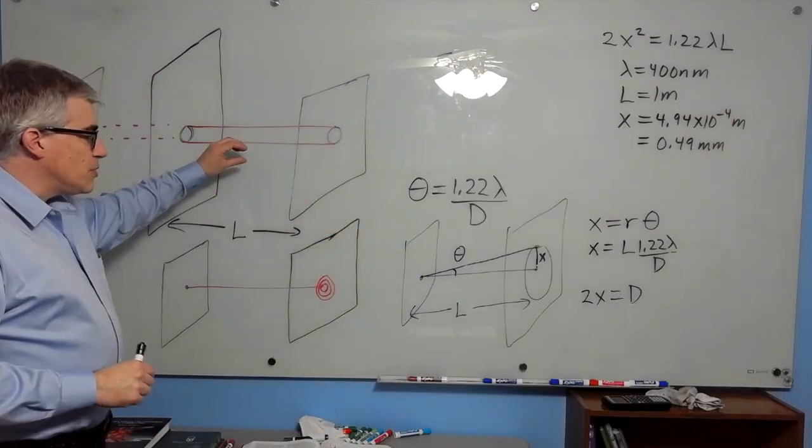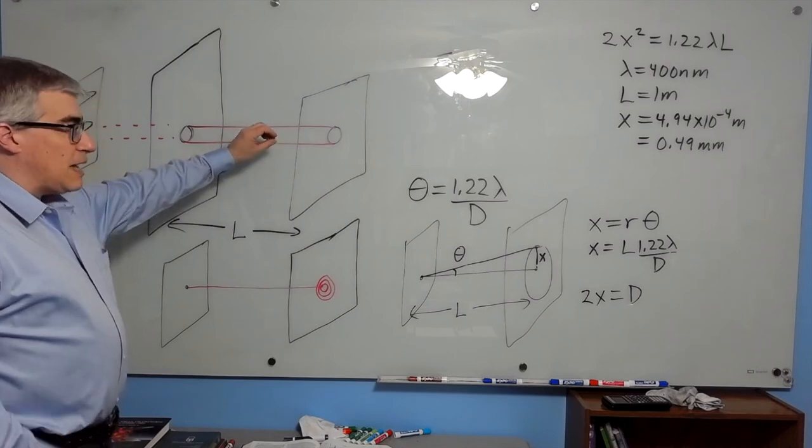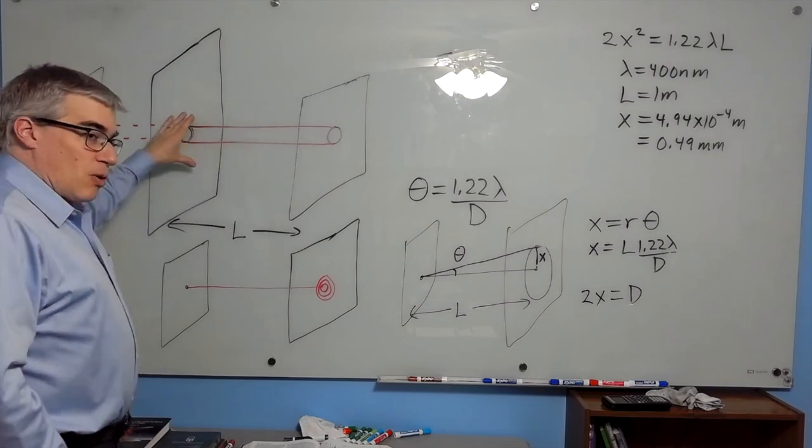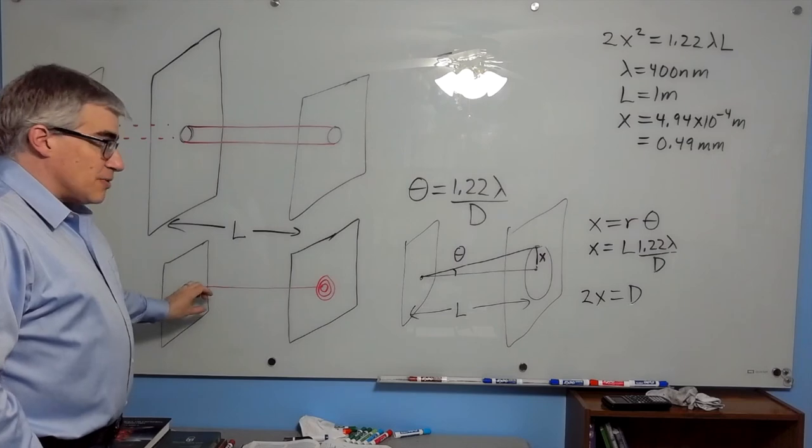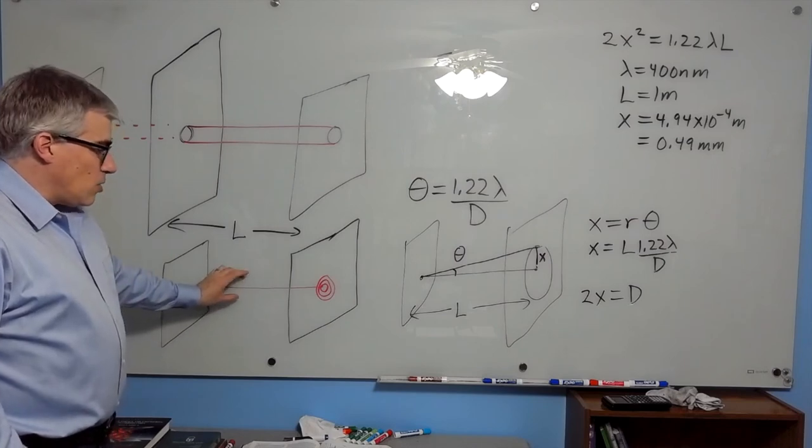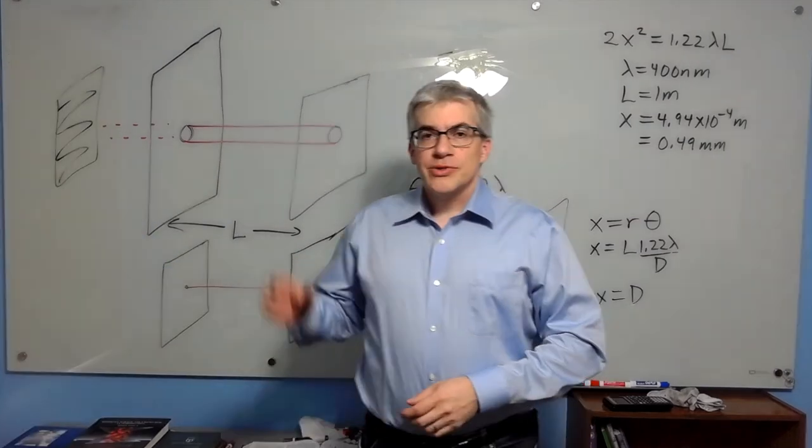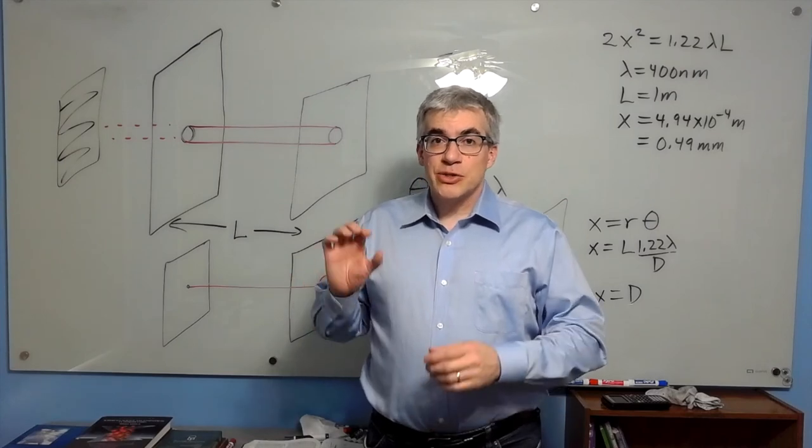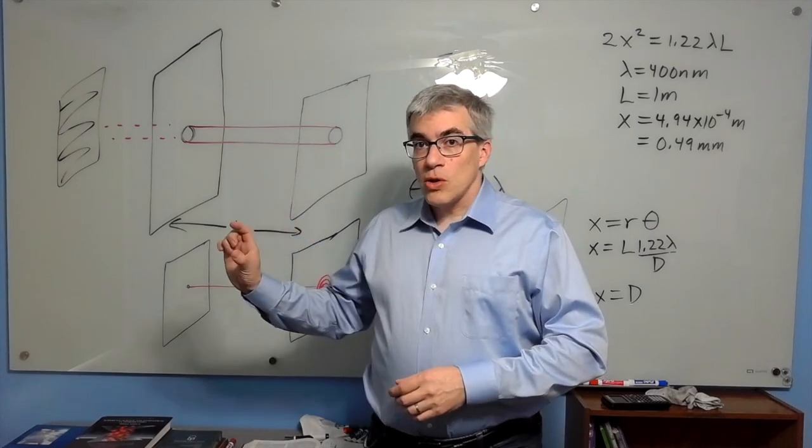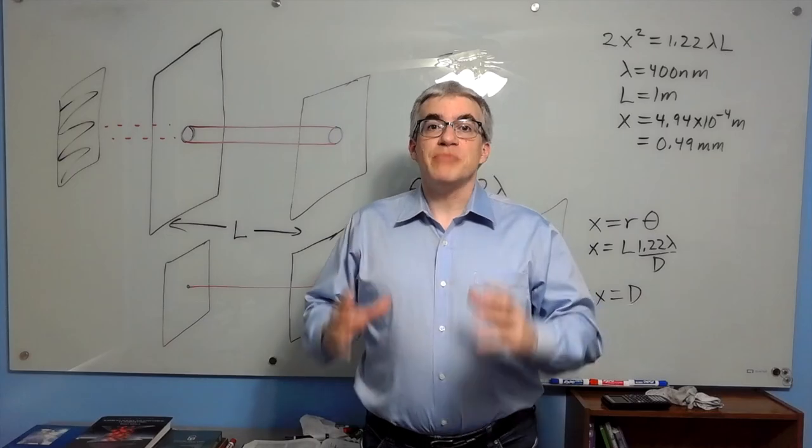Bigger holes than that would produce bigger spots that get even bigger when you expand the hole. And if it's smaller than that, then expanding the hole would actually shrink the pattern. So the size of the light spot is controlled by the size of the hole and the size of the diffraction pattern, whichever one is bigger.